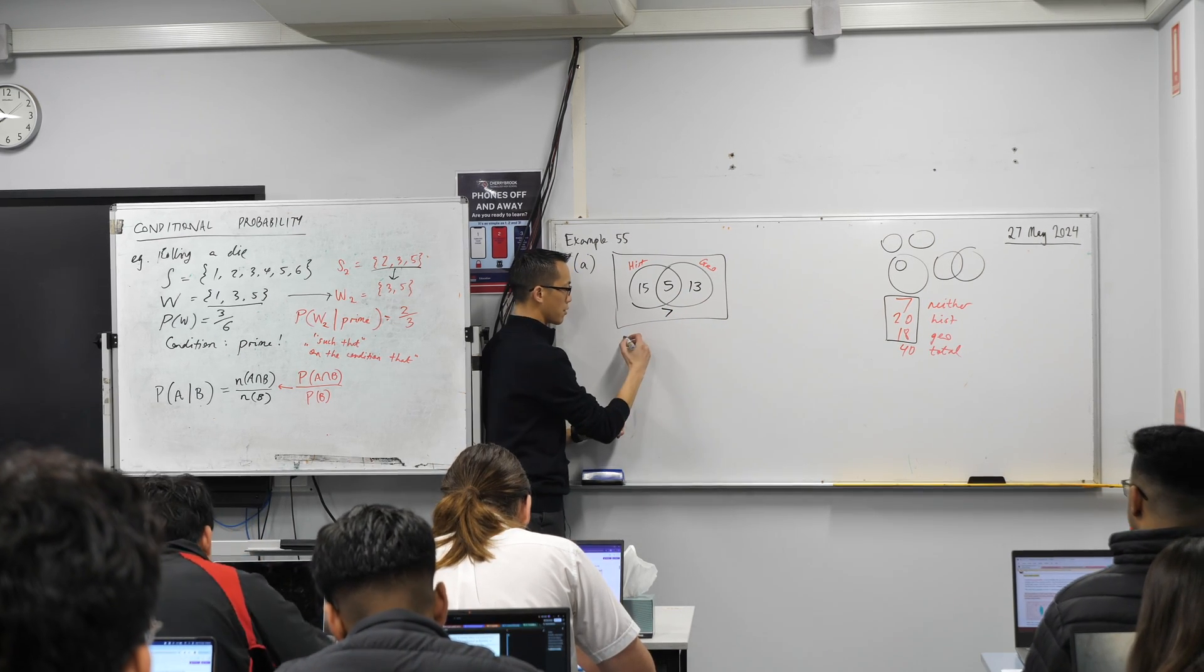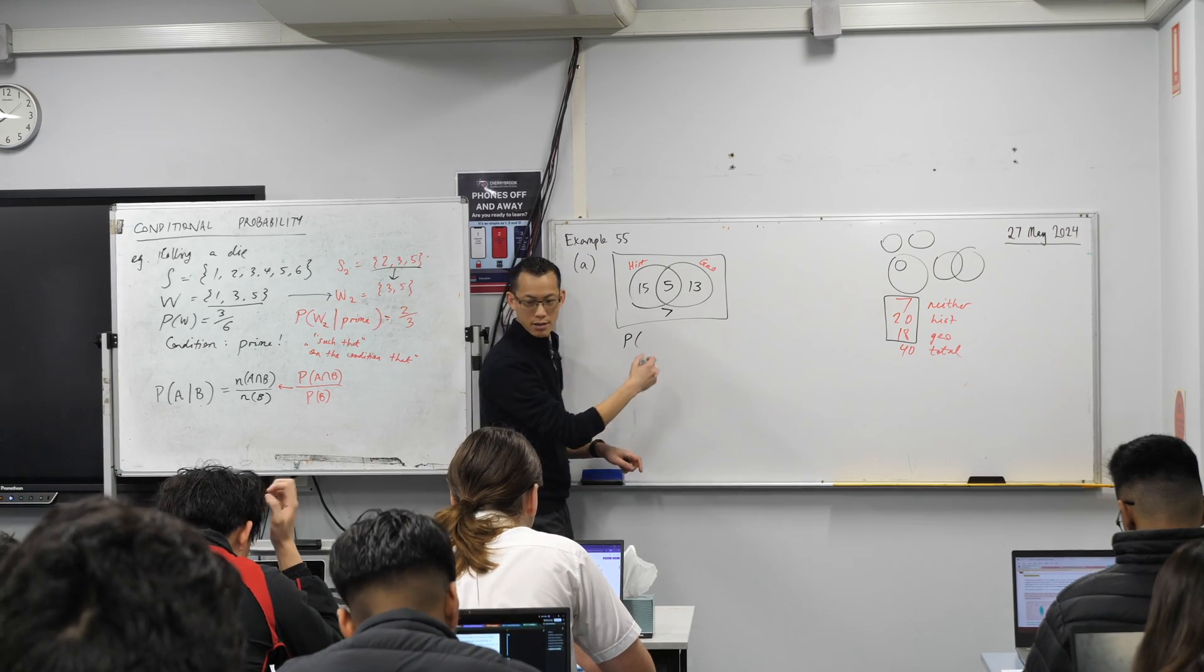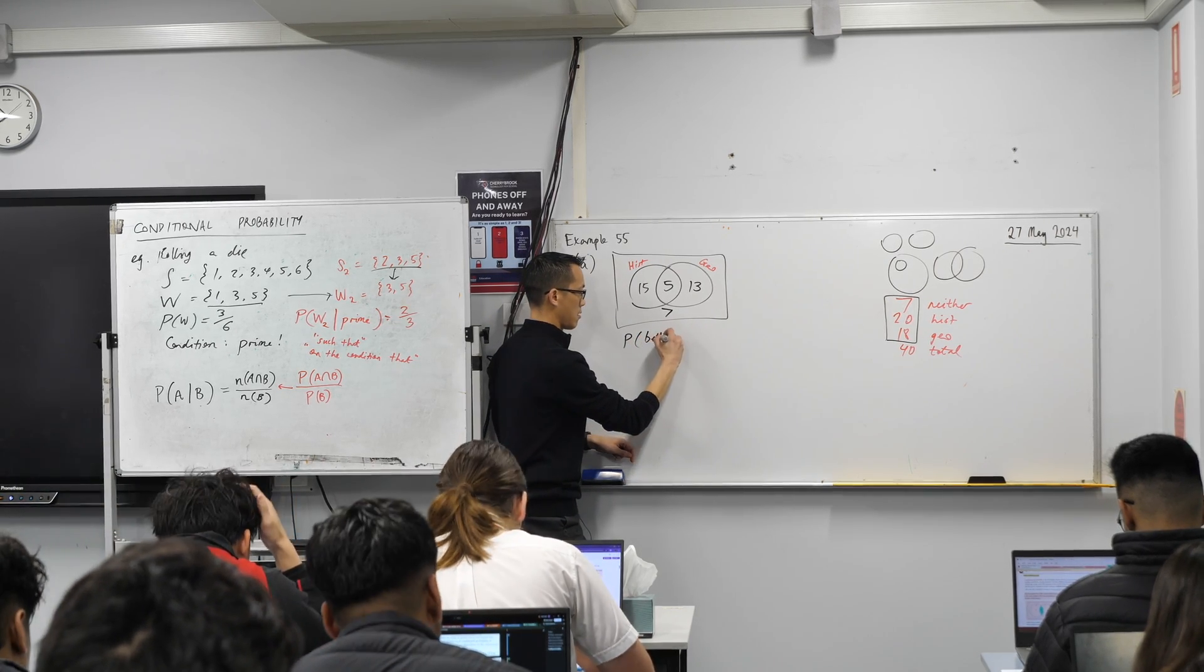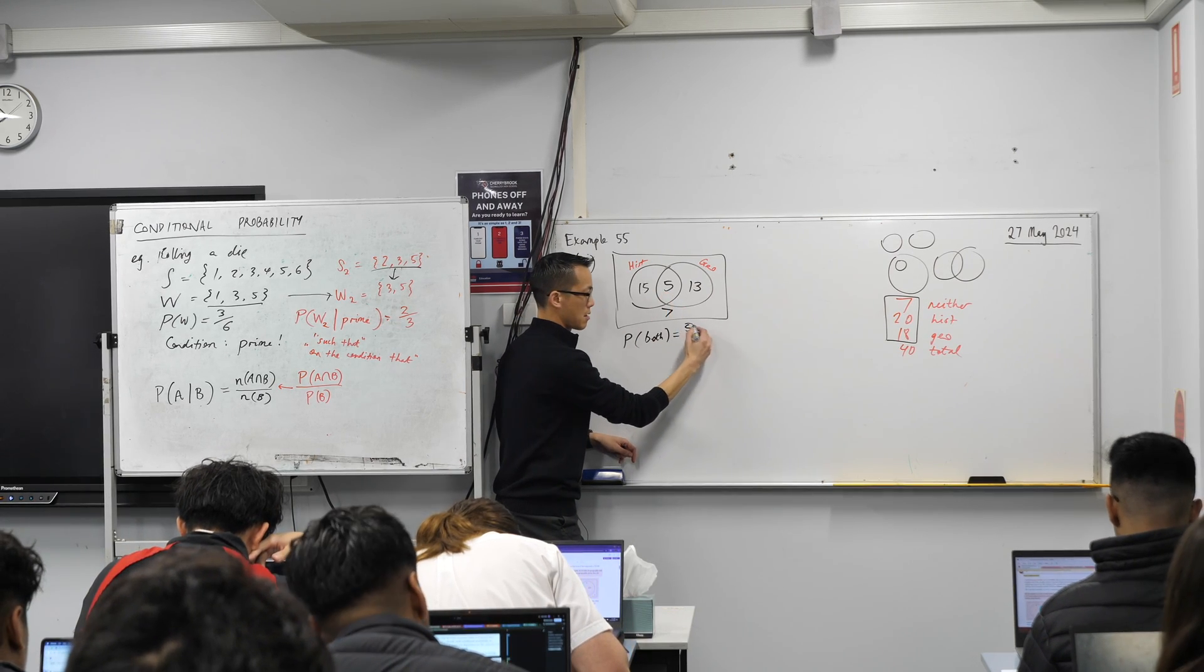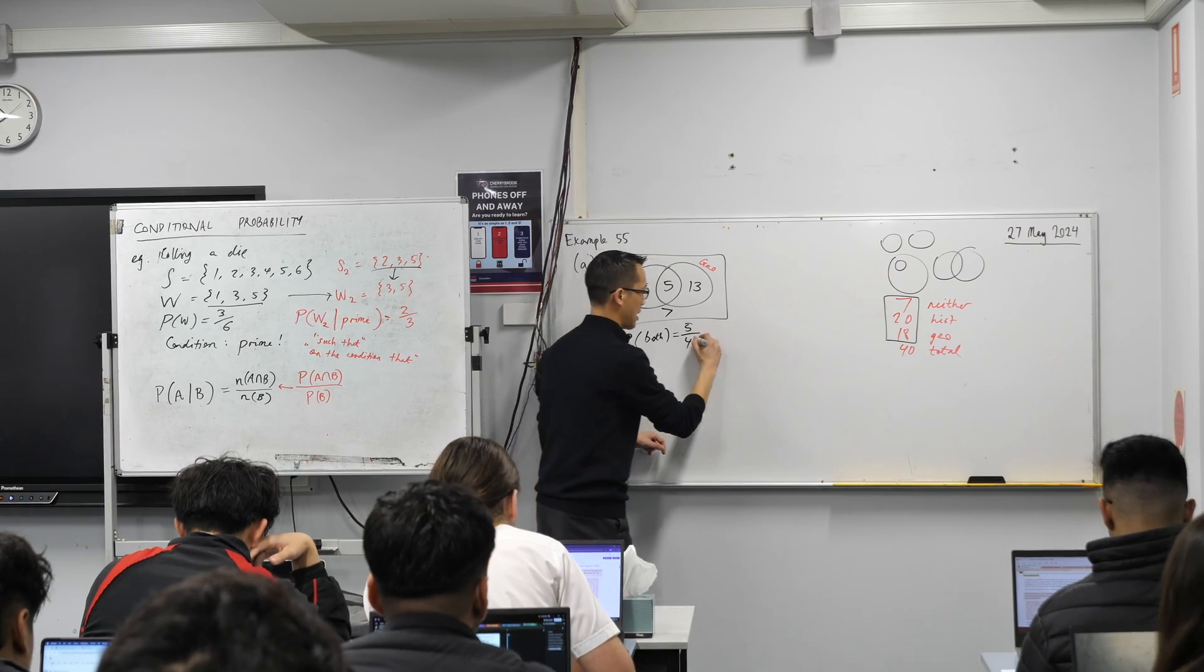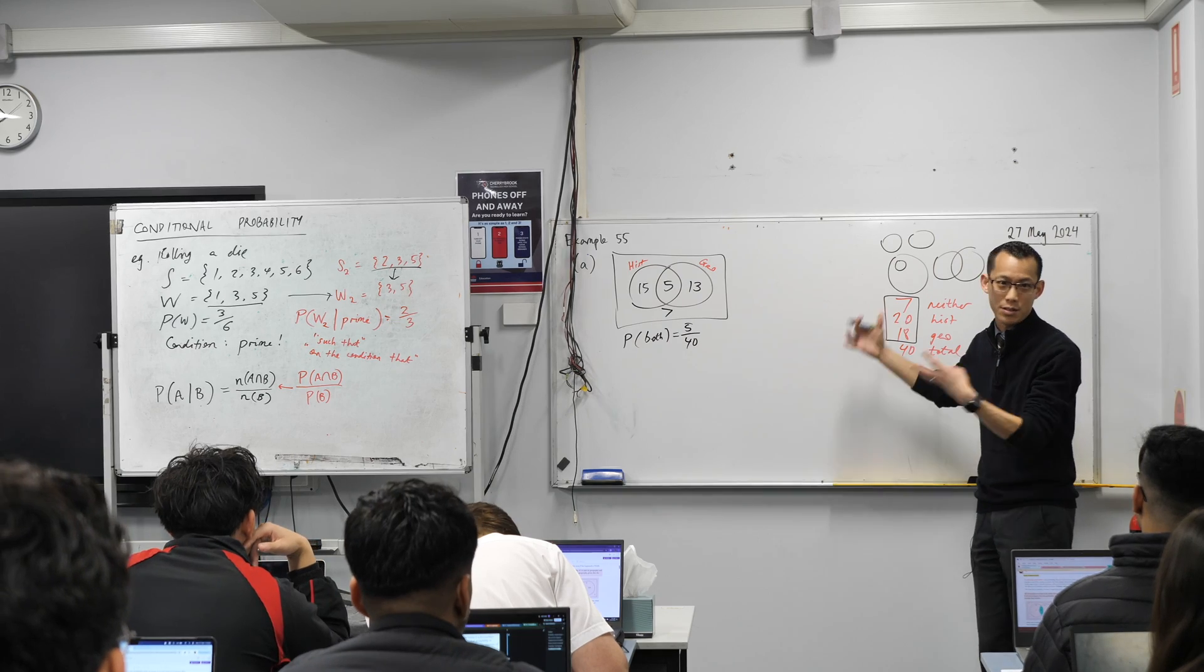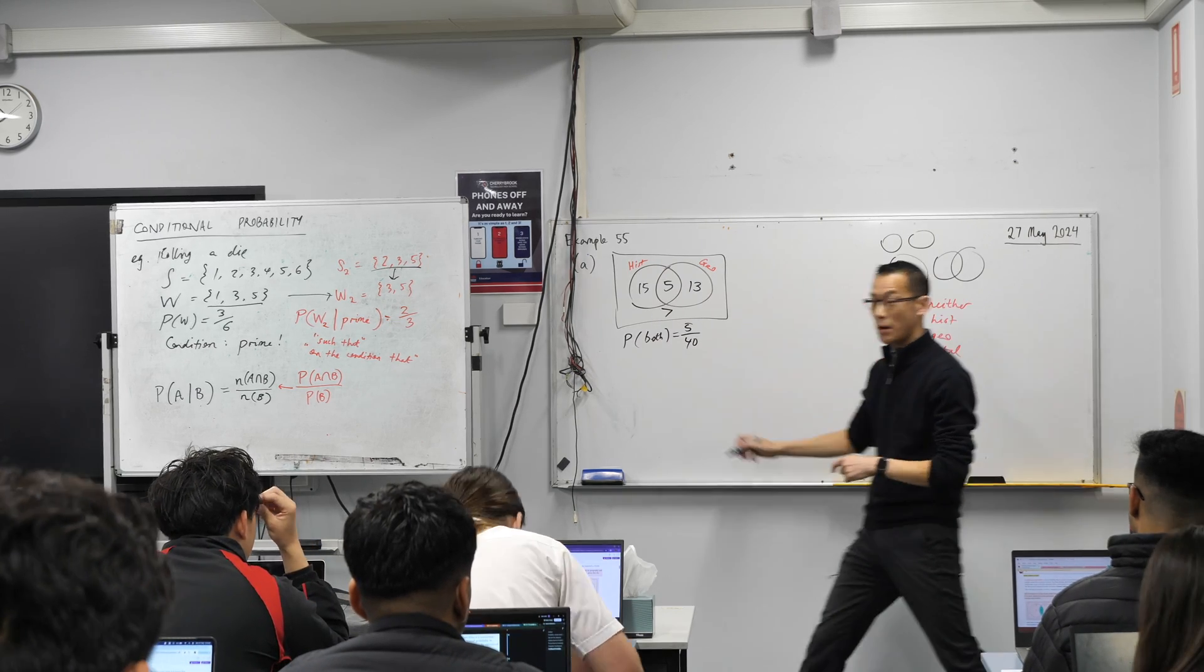So, probability of a random student studying both. This is 5 over 40 for our sample space. I know you can write that as 1 over 8, but I'm just going to leave that because that's it. That was part A.